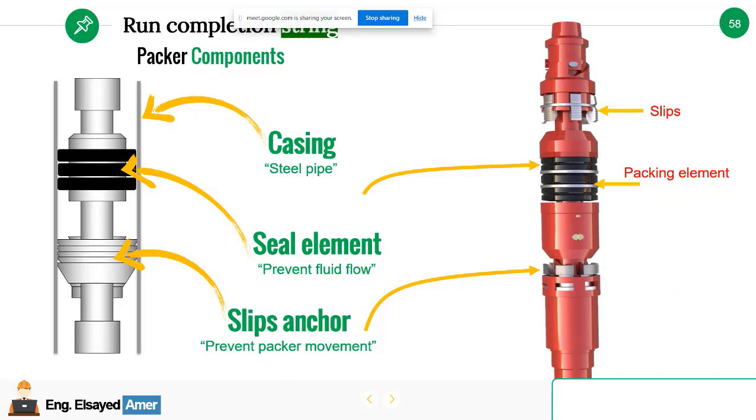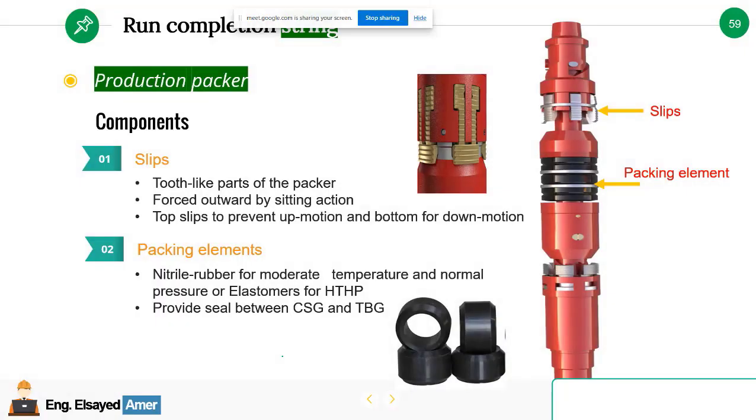So the packing element will prevent the fluid movement, making a seal between the annulus and the tubing, as well as the slips. Slips anchoring is used as a metal to metal hanging, which prevents any movement of the packer and the tubing and the completion inside the annulus. And this is the actual photo of the slips.